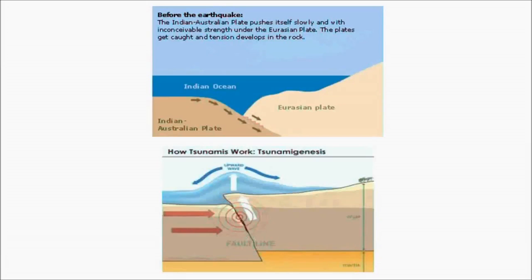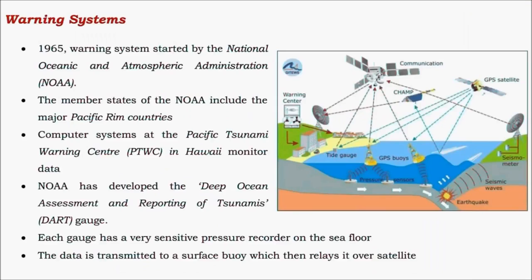This is what happened in the 2004 tsunami, where the Indian plate plunged into the Eurasian plate, that is the Burma plate. Due to the upthrusting of the Burma plate, there was huge displacement of columns of water, resulting in a devastating tsunami. Since tsunamis are not frequent in the Indian Ocean, the 2004 tsunami was the first major one, and no warning systems existed before it.